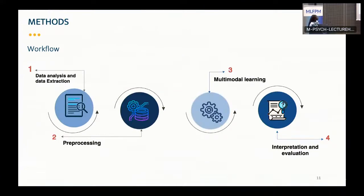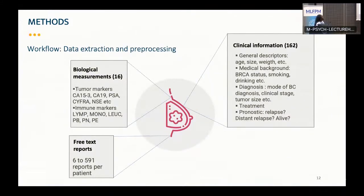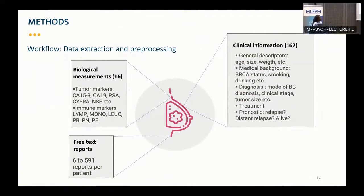Here I present the pipeline: first, analyze and extract the data; then do the pre-processing; then perform multimodal learning; and then do the interpretation and evaluation of the prognostic factors. For the structured data from the database, I have clinical information with over 162 features, as well as biological measurements such as tumor markers and human markers, which are sequential features. The ALIAS database contributes free-text reports — each patient has six to around 600 reports in their folder.